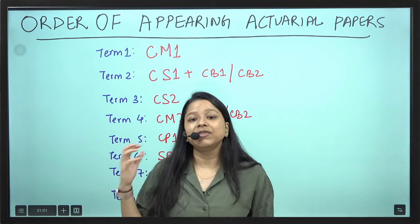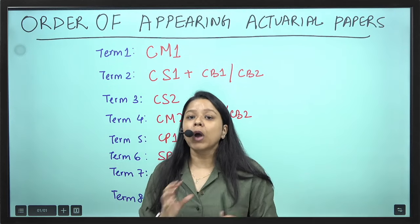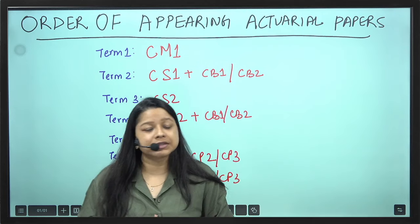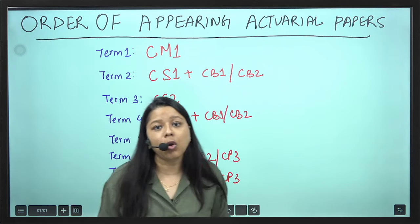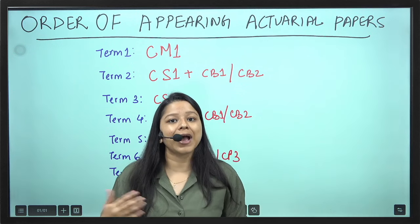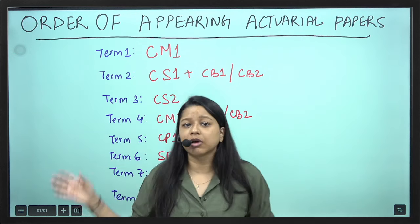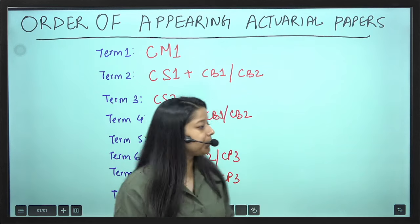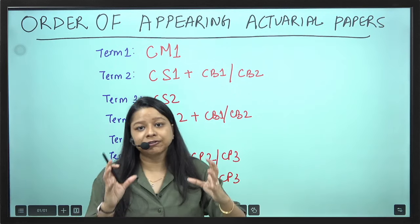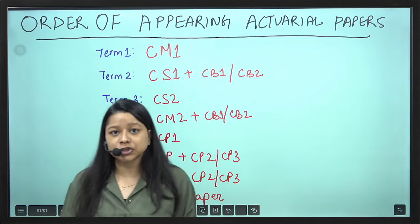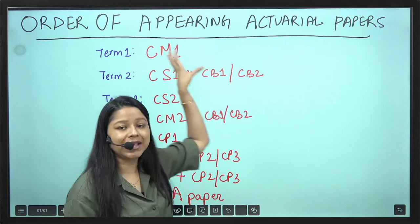We have made a timeline wherein in 8 terms, if you are studying consistently - let's suppose every day if you are giving 4 hours in your college along with your college, and once you have completed your graduation, 2-3 hours every day is more than enough to complete these papers. If you're having a good 5 months of time for your preparation, you can easily pass a CM1 paper.